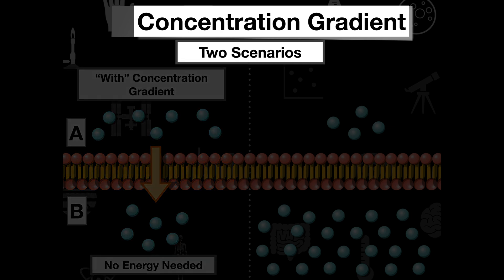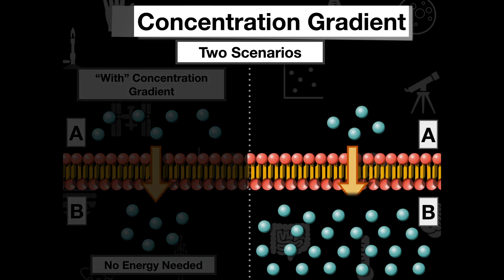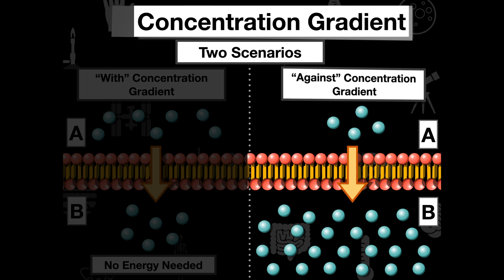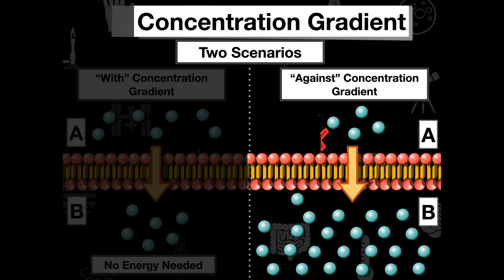Now in the scenario on the right, we are moving against the concentration gradient. The reason we're moving against the concentration gradient is we want to go from A to B, but the particles want to diffuse the other way. In a cell, we don't always want that to happen.